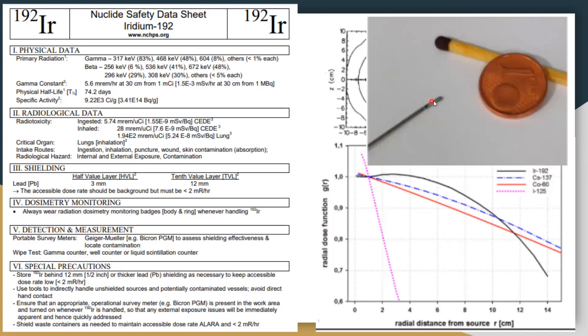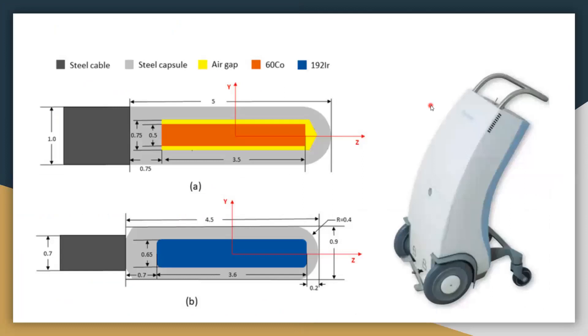This is a typical source size. These are the things for comparison. The iridium source is popular because of high specific activity, which allows us to make a very small source size. This is the difference between the iridium source and the cobalt-60 source. You can see the difference in the size. Nowadays, cobalt-60 is also in the clinics because of higher half-life, so it's quite economical. But shielding requirement increases.